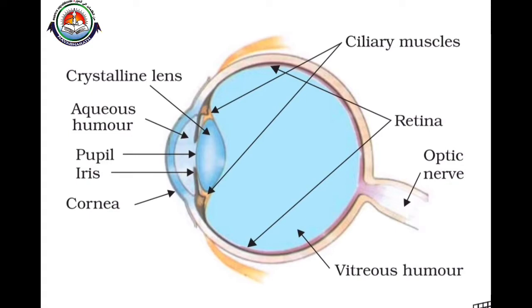Now we are going to discuss the parts of the eye and their functions. The main parts of a human eye are: cornea, iris, pupil, ciliary muscles, crystalline lens, retina, and optic nerves.